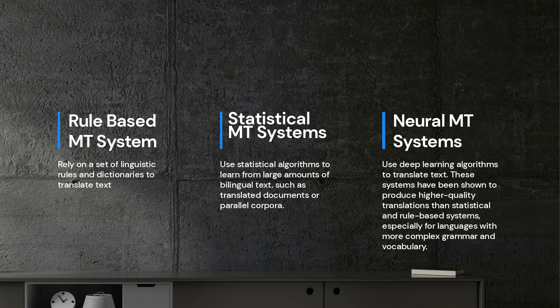However, the quality of the translation can still vary depending on the type of content being translated and the training data used to build the MT system. Customized MT systems are trained on specific domain or industry data, such as legal or medical texts, and can produce high-quality translations for specific types of content.